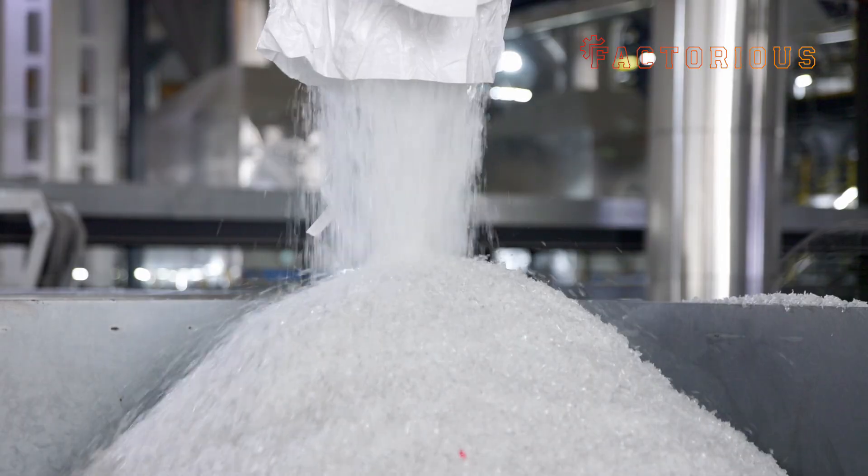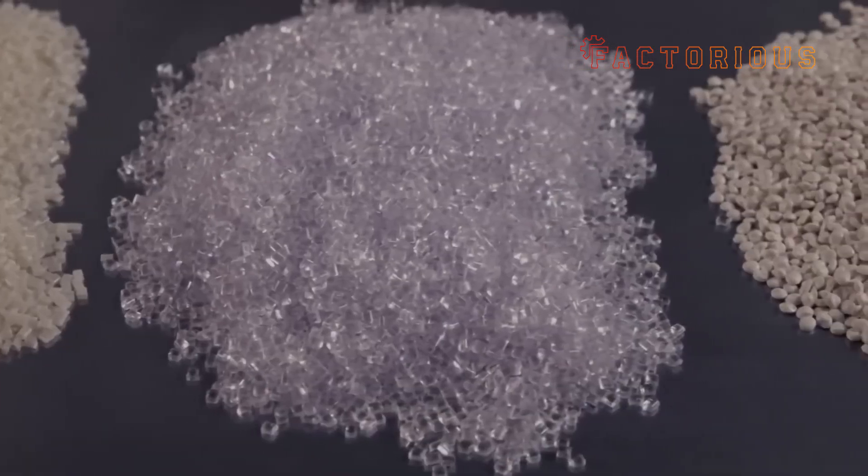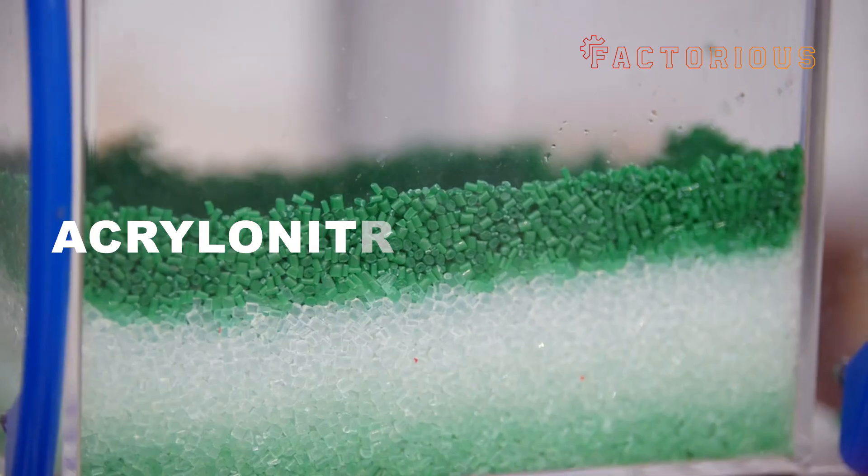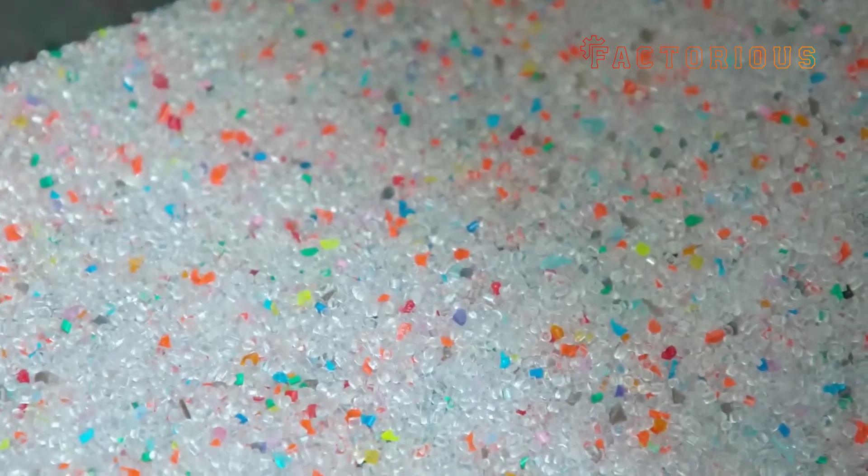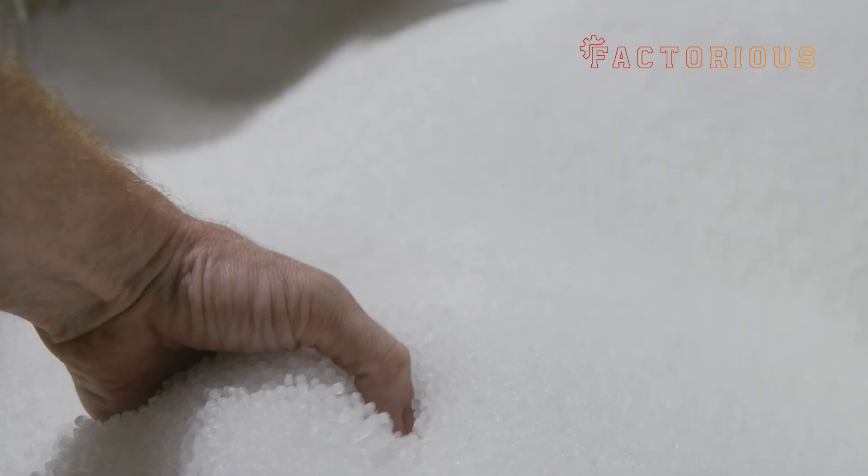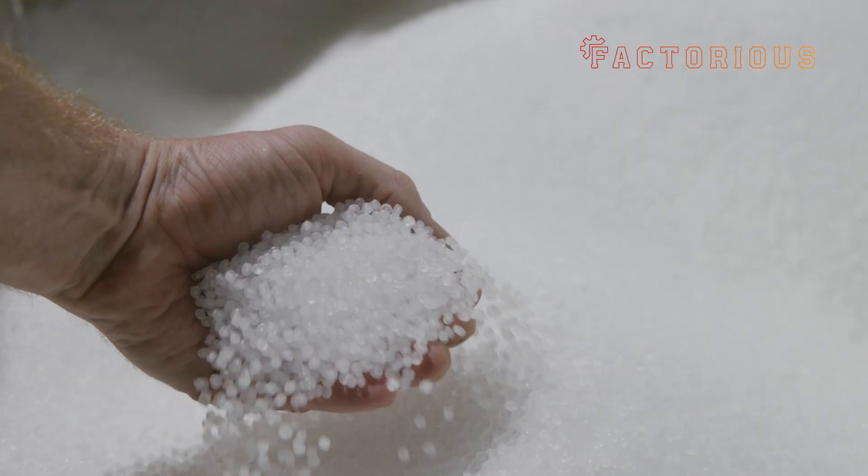The oil goes through a refining process, producing a chemical compound called ABS, short for acrylonitrile butadiene styrene. But let's be honest, no one's ever going to remember that after this video.